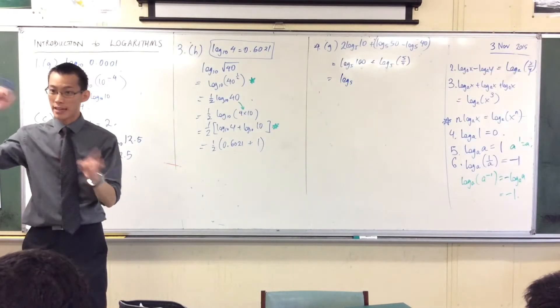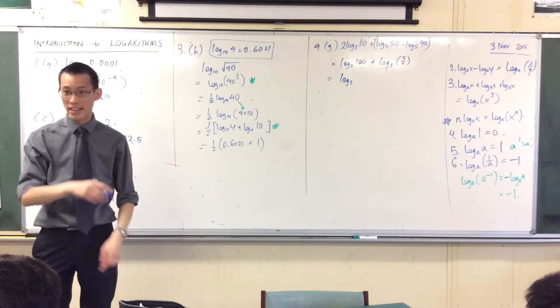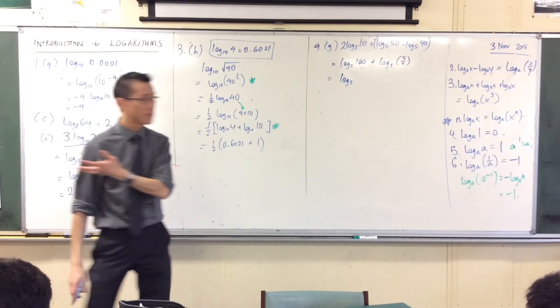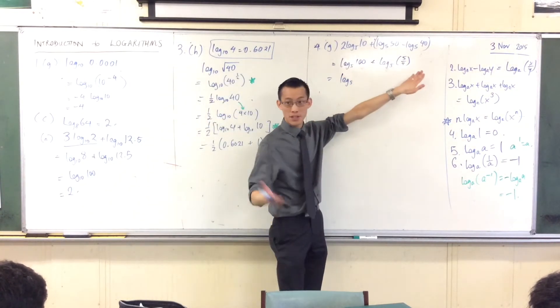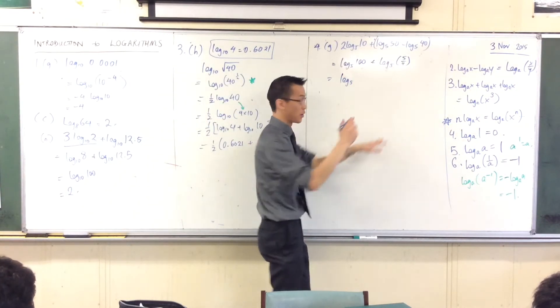The hundred and the four, they can cancel some stuff there. The four's going to cancel, leave me with 25. So I'll have 25 times five, which is a hundred and 25.